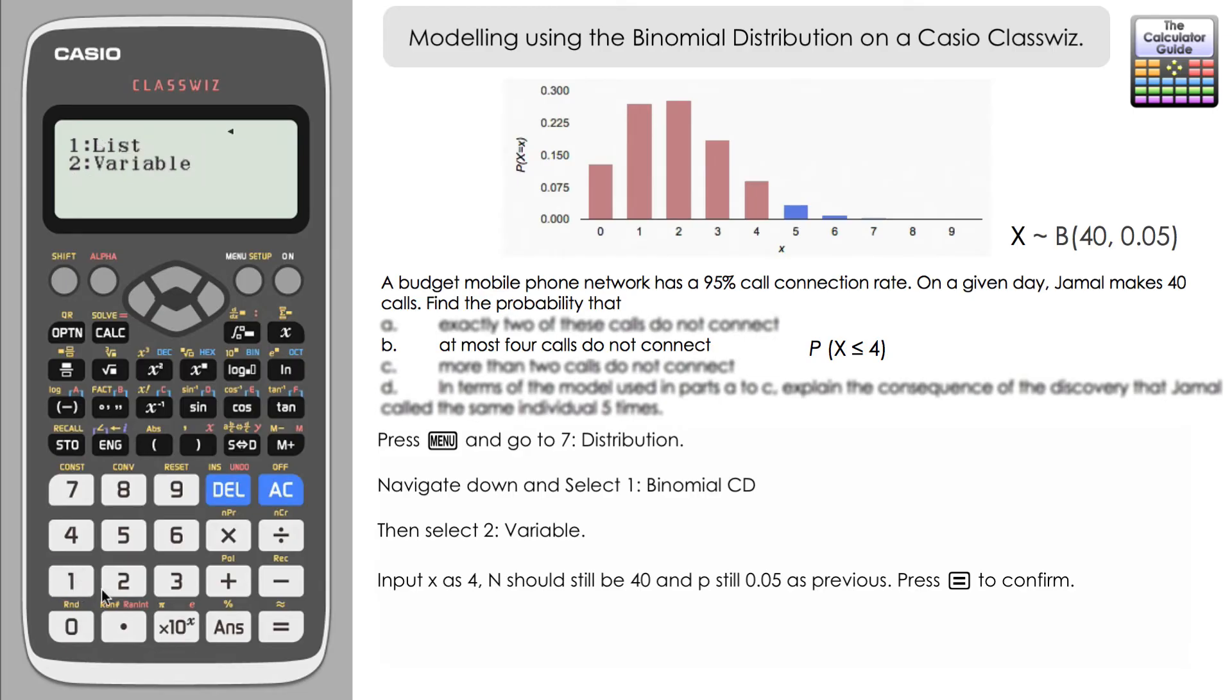And once again, variable, we've got our data here from when we inputted it previously. But we need to change our x to four. Now we want to find out the probability of x being less than or equal to four. And here we have well, 0.95. Well, two zero, if we're going to give it to four decimal places here. So there's actually that 95% probability that there won't be any more than four calls that don't connect.